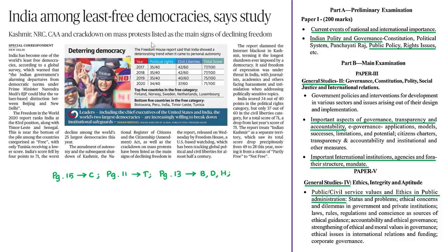Moving on to the next discussion, this news article is about the recently released Freedom in the World 2020 report, released by a US-based NGO named Freedom House. This report is titled 'Leaderless Struggle for Democracy.' In this discussion we'll cover the present situation of democracy across the world, important findings of the report, India-related findings, and recommendations to strengthen democracy.